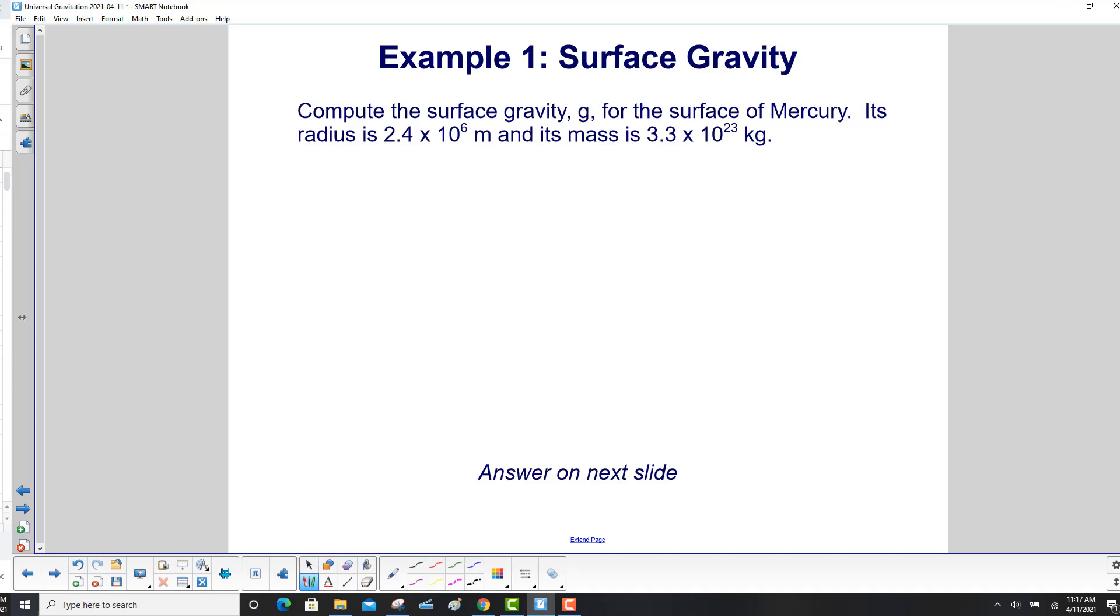Compute the surface gravity, little g, for the surface of Mercury. Its radius is 2.4 times 10 to the 6 meters, and its mass is 3.3 times 10 to the 23rd kilograms.